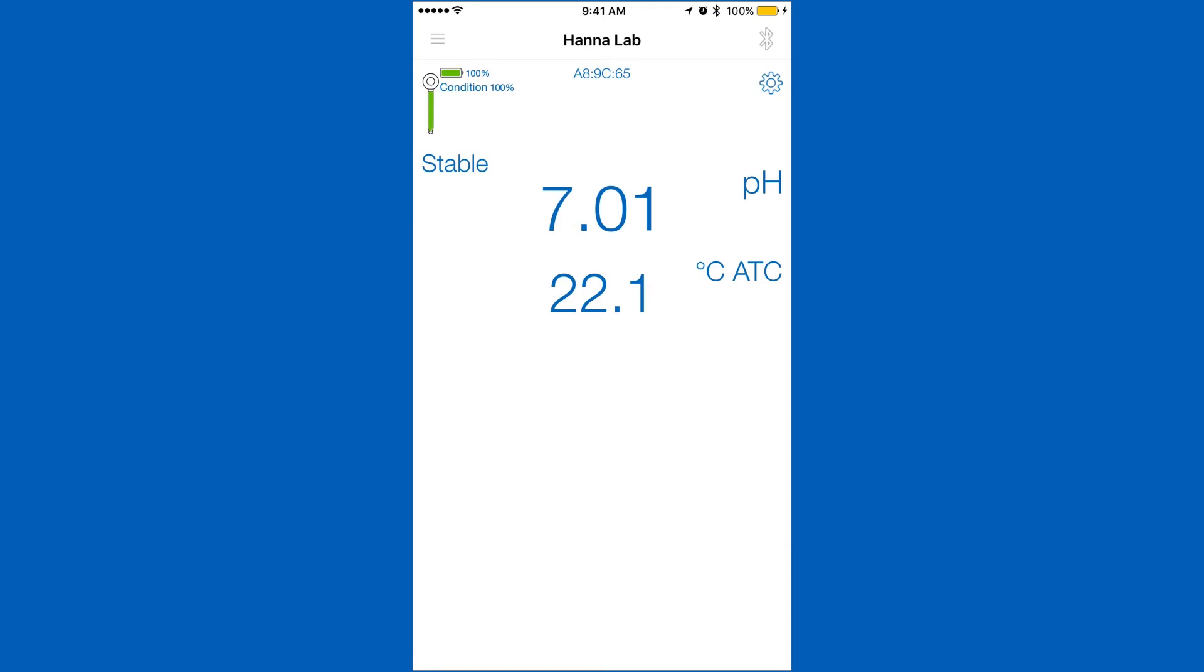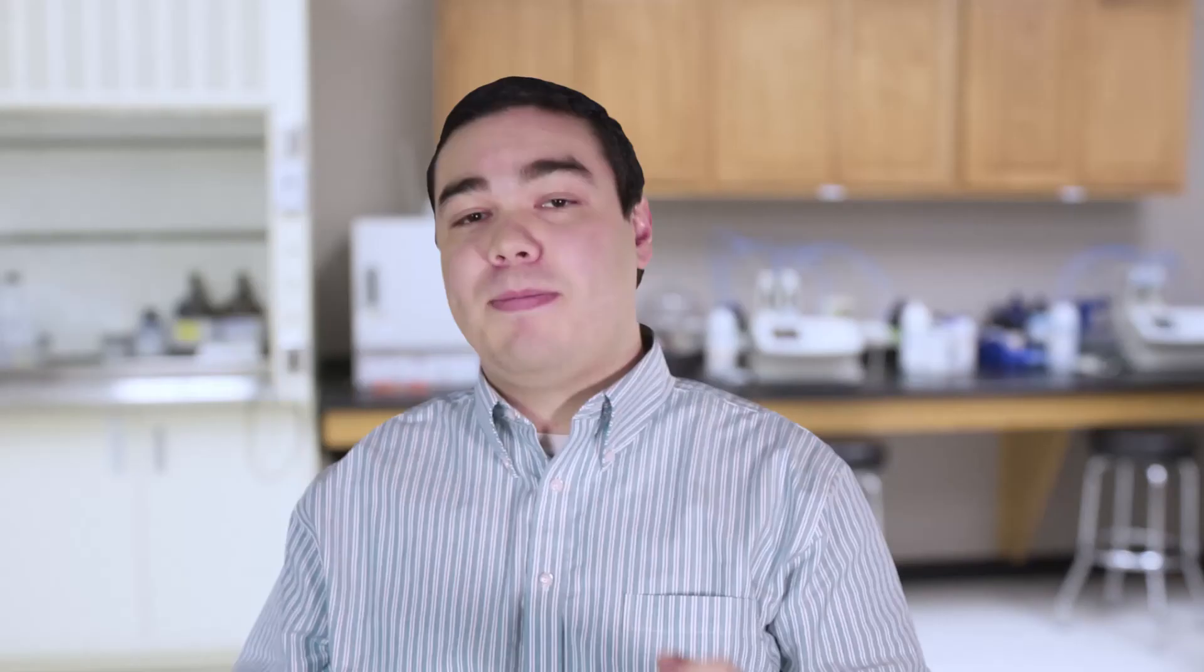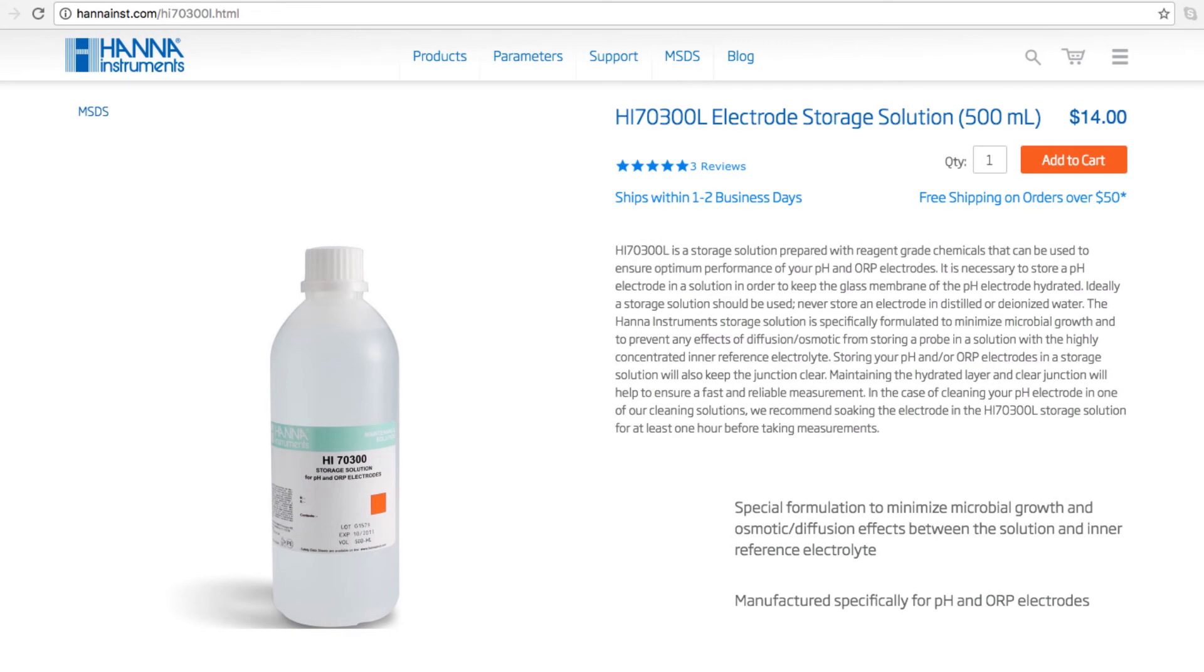When you're not using your pH probe, keep it in storage solution. Without proper storage, the electrode gets dehydrated. It's best if you rinse and store your electrode after every use. We recommend our HI70300 bottle of storage solution. If you don't have storage solution, pH 4 buffer works too.